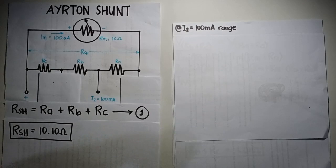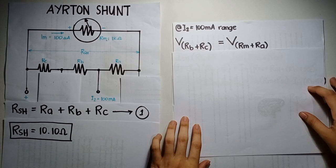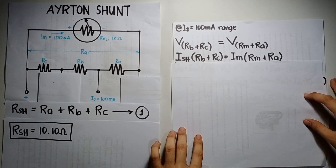We will proceed on the 100 mA range. The voltage across Rb and Rc is equal to the voltage across Rm and Ra. Since we don't have the value for their voltages, we will use their current and resistances.